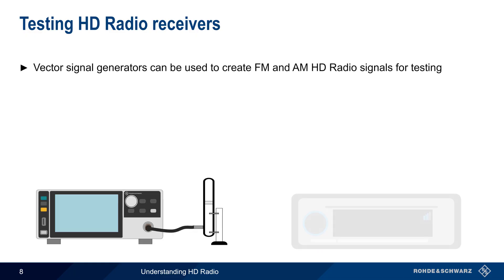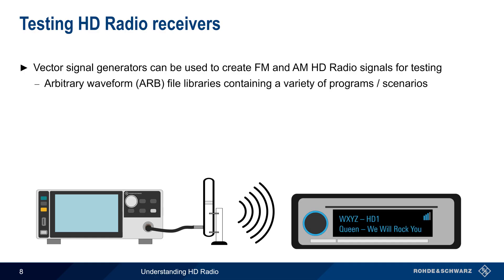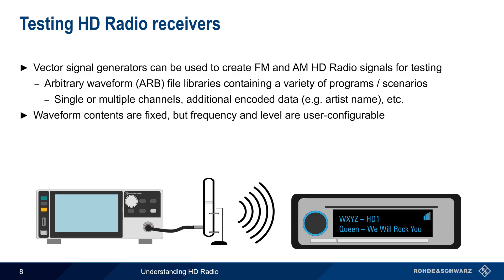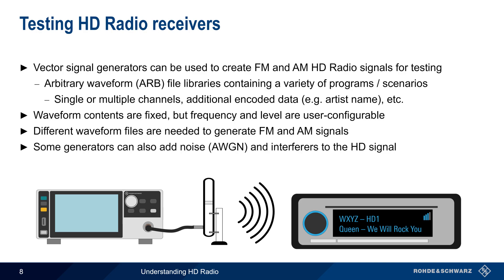Testing HD radio receivers is most often performed using vector signal generators, which can create both FM and AM HD radio waveforms. Arbitrary waveform or ARB file libraries containing a variety of programs are then input into the receiver, either via a cable or over the air. In order to comprehensively test HD radio, these test scenarios must include single and multi-channel transmissions, additional encoded data such as station and artist name, emergency alert service messages, etc. The waveforms and ARB files are fixed, but the frequency and level of these files can be changed on the generator. Because AM and FM HD radio signals are quite different from each other, different waveform files are needed for testing FM and AM. Some vector signal generators can also add noise and/or interferers to the generated HD signal, allowing for more realistic test scenarios or testing reception under challenging conditions.